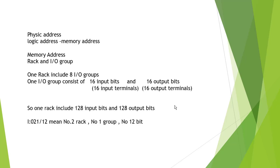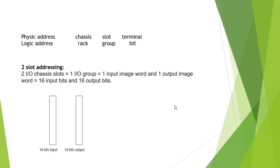For example, I:021/12 means rack number 2, IO group number 1, bit number 12. The physical address is just the node terminal. The logical address is the rack address. There are three kinds of addressing: two-slot addressing, one-slot addressing, and half-slot addressing.